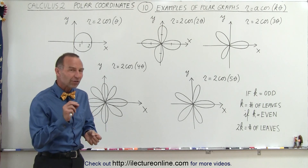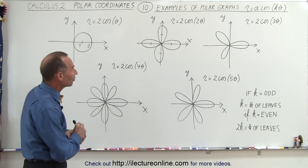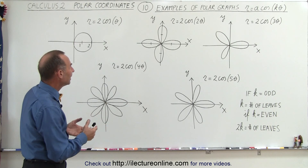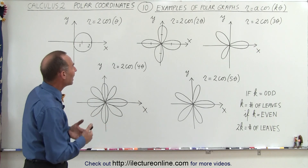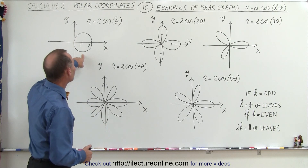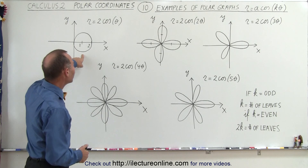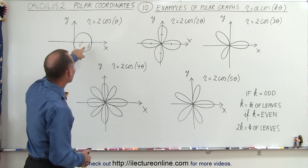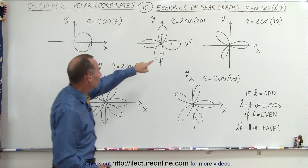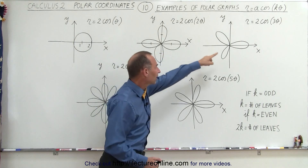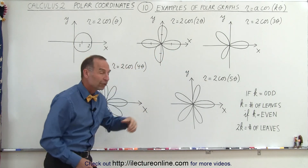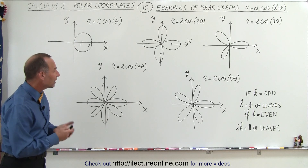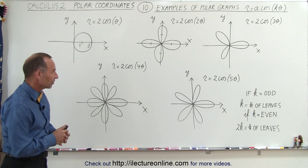There are some subtle differences between the cosine function and the sine function. In all cases, at least one leaf will be on the positive axis. Here you have a leaf on the positive axis, and again over there, there, there, and there. So you can see that in all cases, you will have at least one leaf on the x-axis.